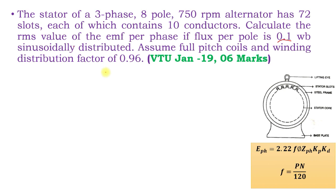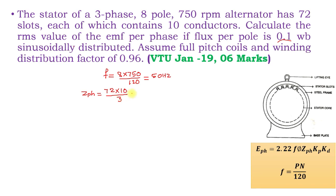In this problem, first we calculate frequency: f = 8 poles × 750 rpm ÷ 120 = 50 hertz. Then we calculate ZPH, the total number of conductors per phase. The number of slots is 72 and each slot carries 10 conductors. ZPH = 72 × 10 ÷ 3 = 240 conductors per phase.